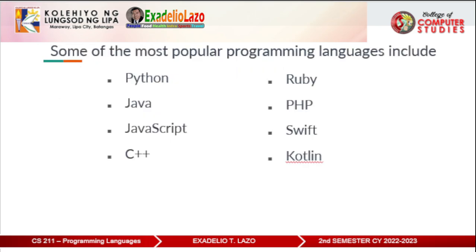Some of the most popular programming languages include Python, Java, JavaScript, C++, Ruby, PHP, Swift, Kotlin, and many more.